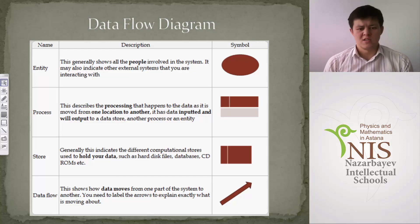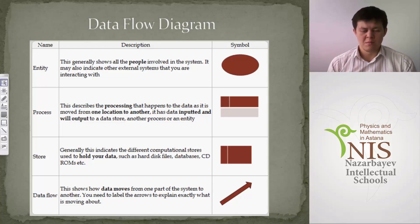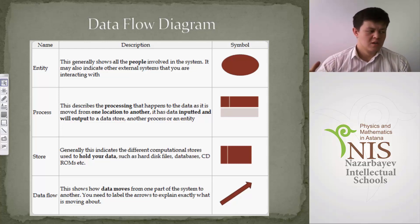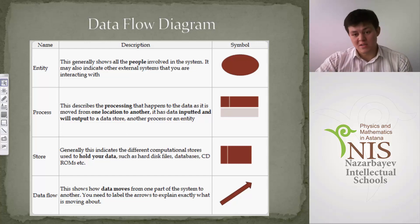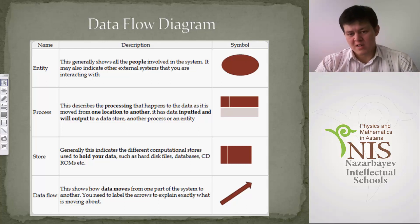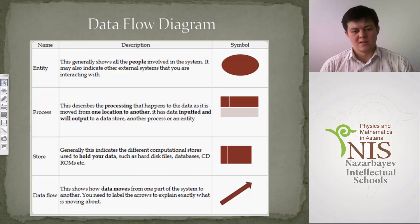The first element is the external entity, which generally shows all the people or objects involved in the system and may indicate external systems you interact with. For example, if describing a school's DFD, external entities could be students, teachers, and staff — everyone involved who makes some processes in the system.